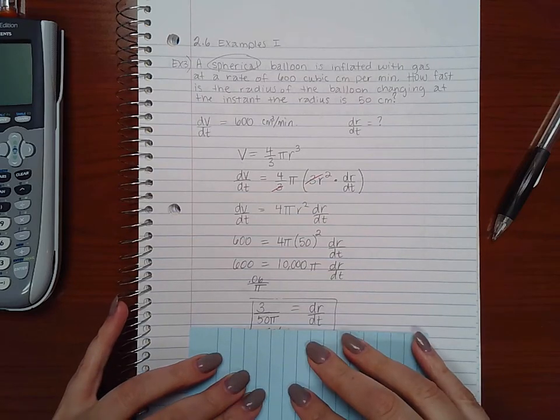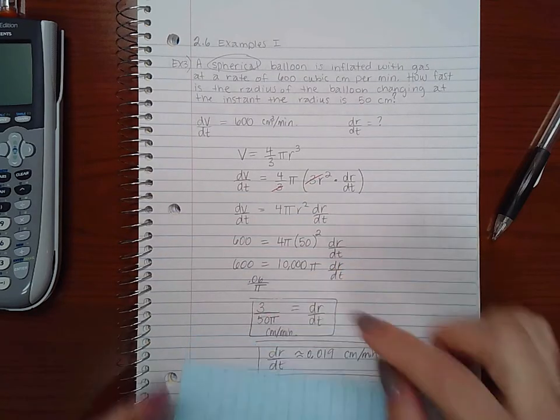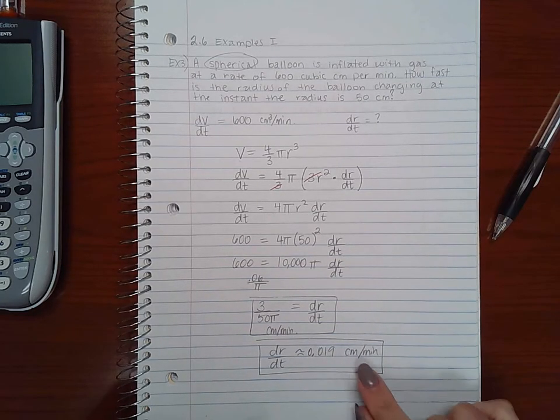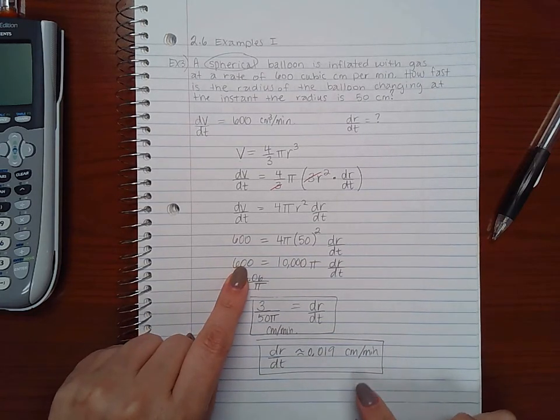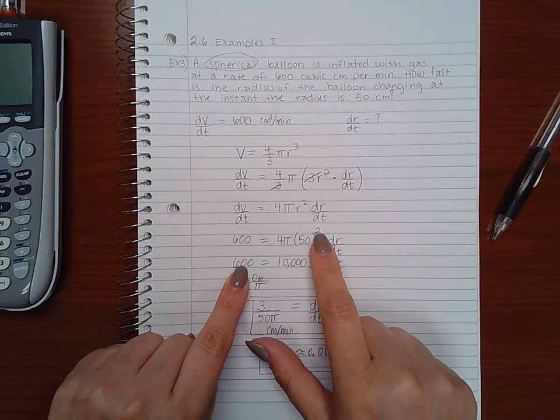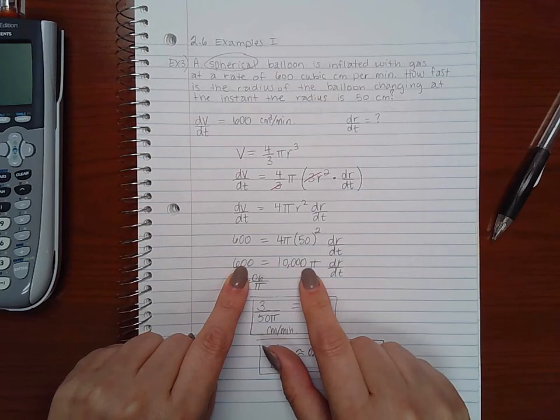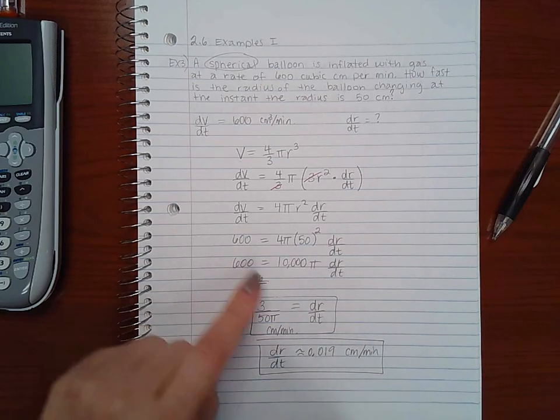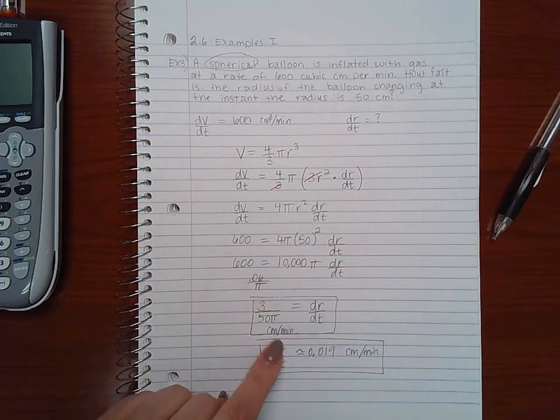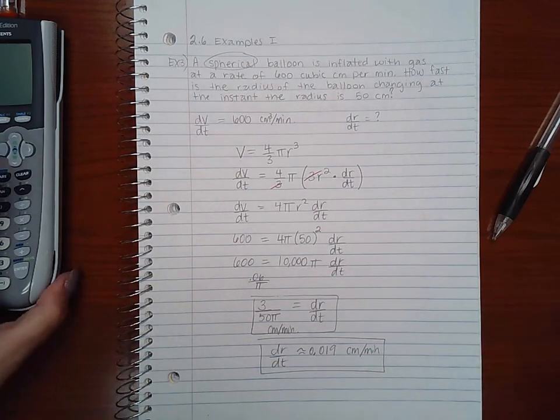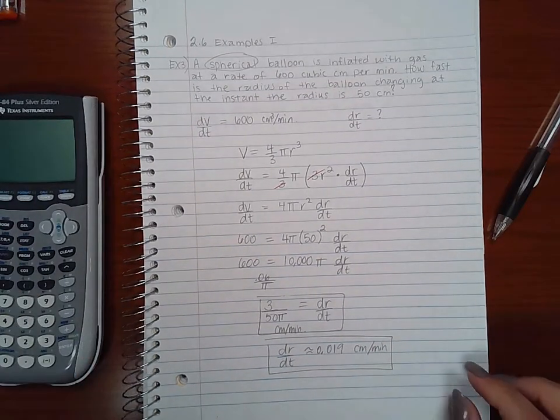If they do say they want decimals, then type this into the calculator and you'll get 0.019. Now my units are: this is cubic centimeters per minute, this was centimeters but I've squared it, so now it's centimeters squared. Well, if you take centimeters cubed over minutes and divide it by centimeters squared, that's where you get centimeters over minutes. Okay, so it's just my units here.